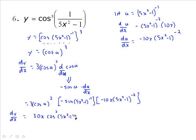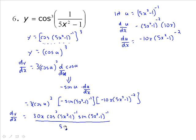Substituting back: dy/dx equals 30x times cos²((5x²−1)^(−1)) times sin((5x²−1)^(−1)), divided by (5x²−1)². The 5x²−1 terms are being multiplied by the trig functions, not used as arguments, so we're free to move them to the denominator with the negative exponent. This keeps the expression clear and easy to read.